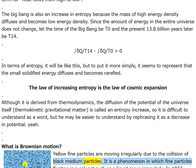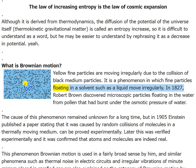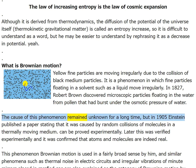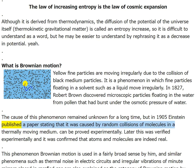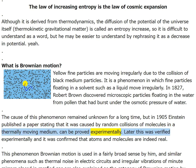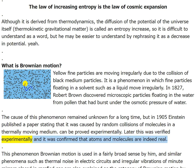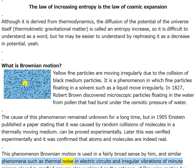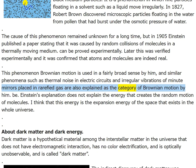Brownian motion: fine particles are moving irregularly due to the collision of medium particles. In 1827, Robert Brown discovered microscopic particles floating in water from pollen that had burst. The cause remained unknown until 1905, when Einstein published a paper stating it was caused by random collisions of molecules in a thermally moving medium. This was verified experimentally, confirming that atoms and molecules are real. Brownian motion broadly covers thermal noise in electric circuits and irregular vibrations of minute mirrors in rarefied gas.